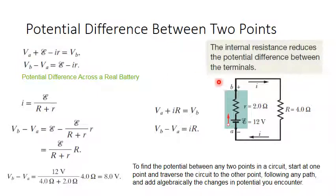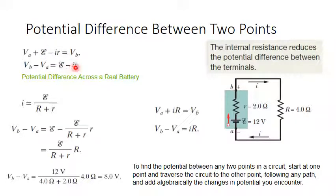Now I have A on one side and B on the other. It is required to find VB minus VA, so rearranging: VB − VA, or VBA, equals E − Ir, which is actually the potential difference across a real battery. Across a real battery, the potential difference is not E; it is E minus the current through the battery times the internal resistance.